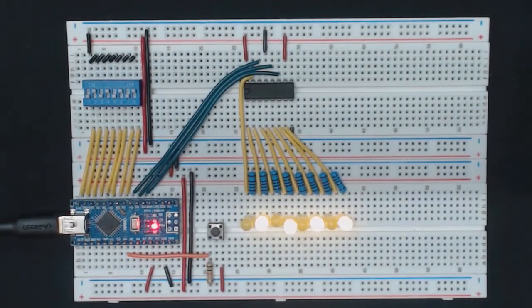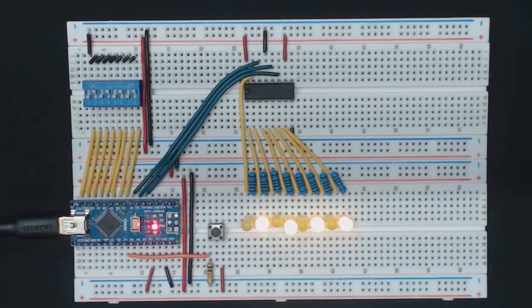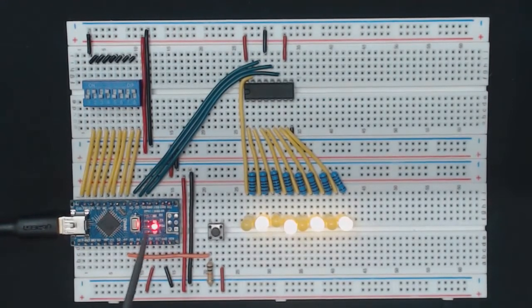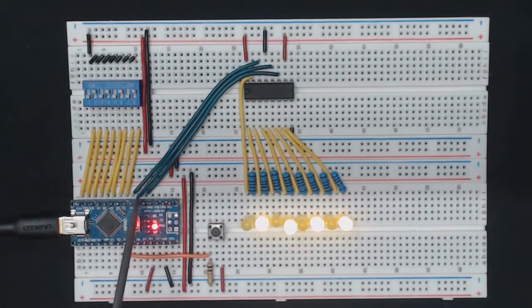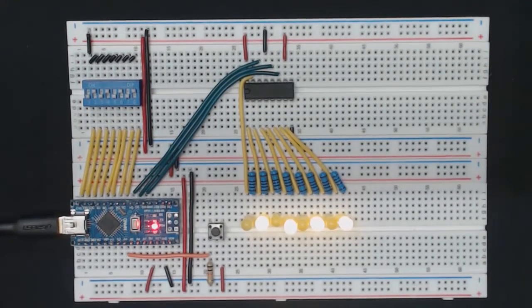Okay, perfect, so that seems to have worked quite well. We can see that the eight bits have been transferred to the shift register through only these three wires. Let's try a different pattern.